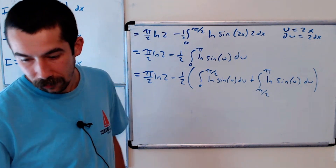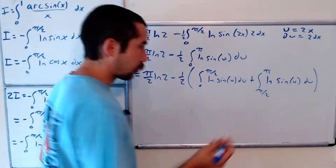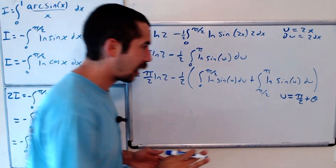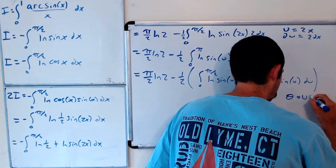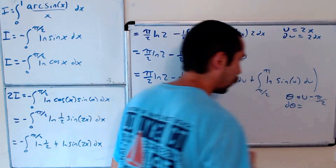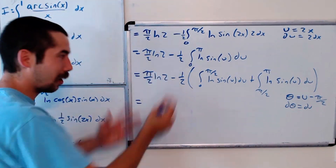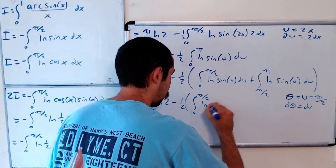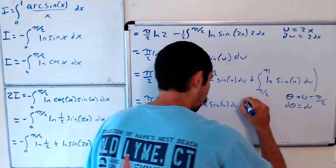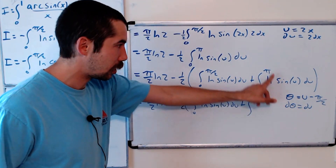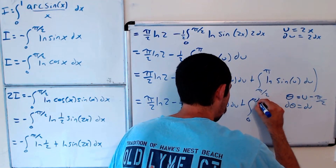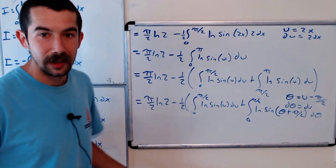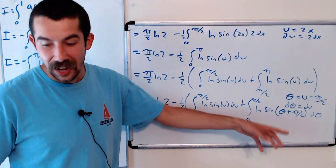For the second piece, we do the substitution u equals pi over 2 plus theta (equivalently, theta equals u minus pi over 2), so d theta equals du. When u is pi over 2, theta is 0; when u is pi, theta is pi over 2. And sine of (theta plus pi over 2) equals cosine of theta. So the second integral becomes the integral from 0 to pi over 2 of ln of cosine theta d theta.